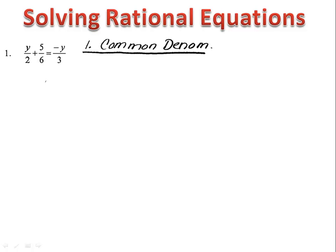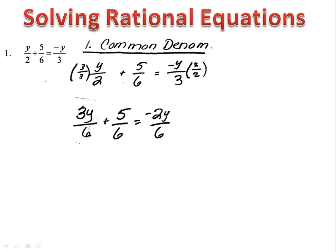We begin by using everything we know about finding common denominators. As we look at the fractions, we see that the common denominator will be 6. We multiply the first fraction by 3 over 3 and the last fraction by 2 over 2. When we do this, we now have common denominators. We have 3y over 6 plus 5 over 6 equals negative 2y over 6.